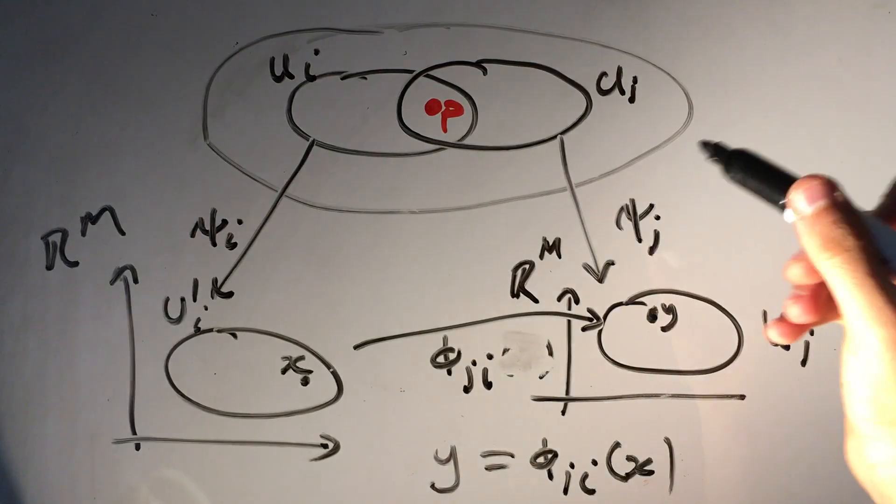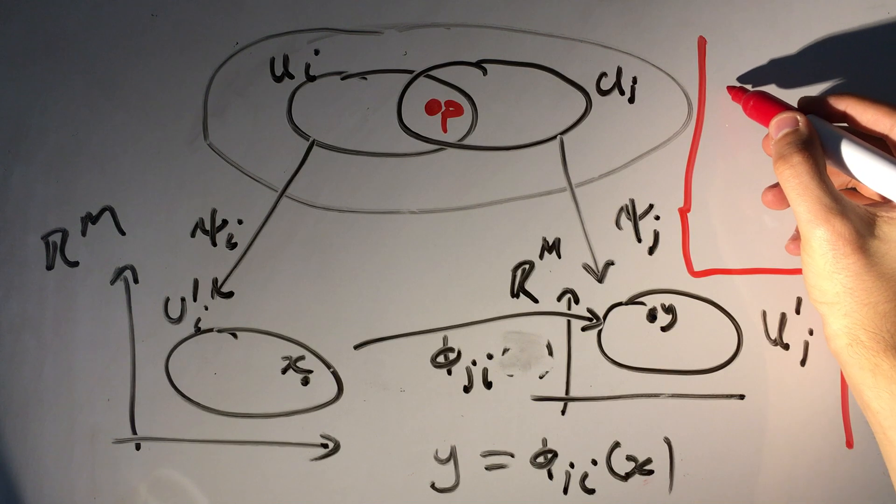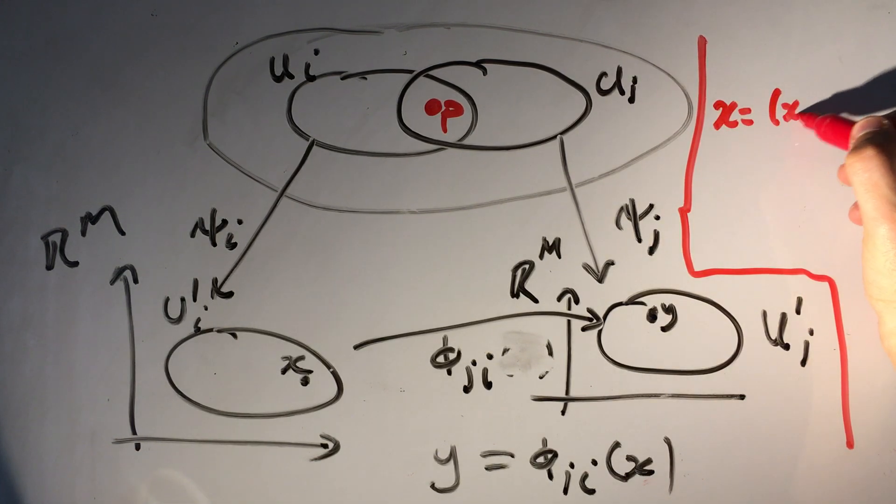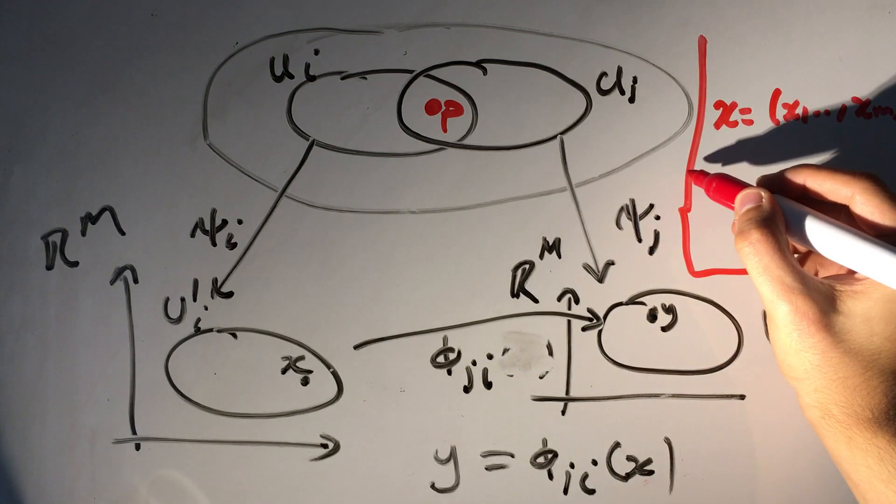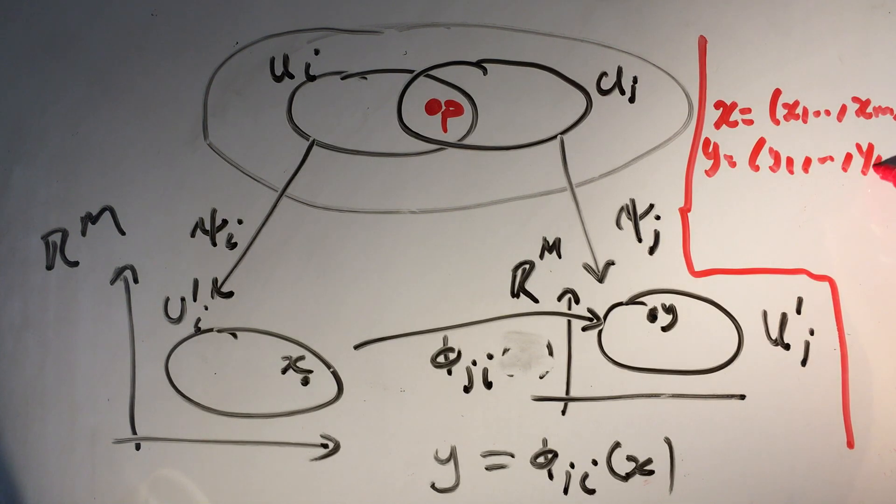I should note that when I say x and y, what I mean is x is equal to (x^1, ..., x^m) and similarly with y.